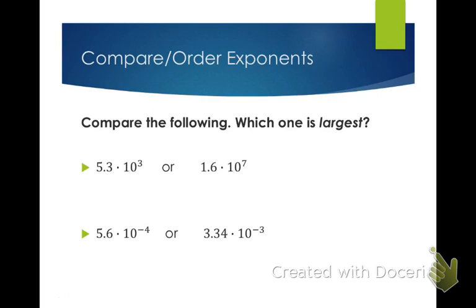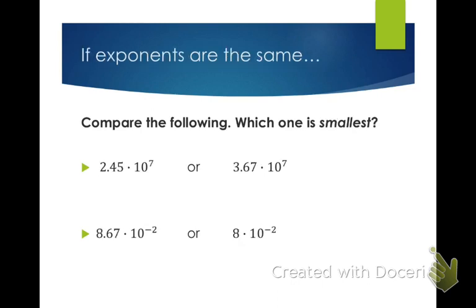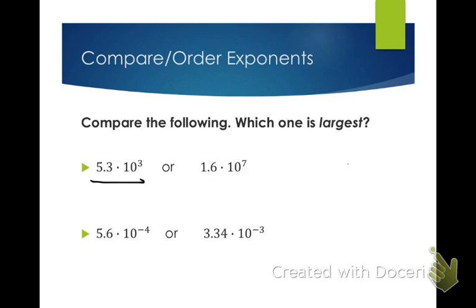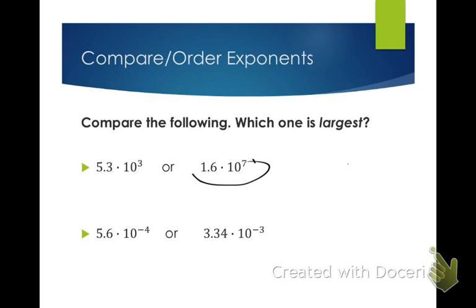So compare and order exponents. To compare the following, we need to see which one is larger. If we look here, we have 5.3 times ten to the third and 1.6 times ten to the seventh. Well, seven is a lot bigger than three, which means this decimal is going to be moved seven times over and have a lot of zeros. So we can tell right away that this is going to be larger than 5.3 times ten to the third, which will only move the decimal three. So the symbol I would put between these is: this one is less than this one.